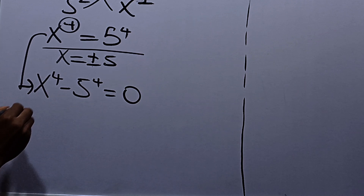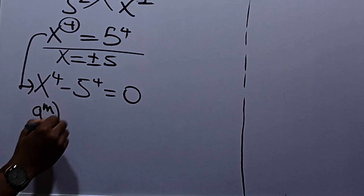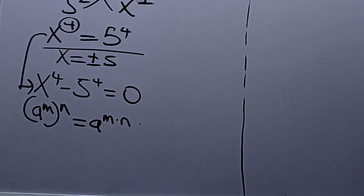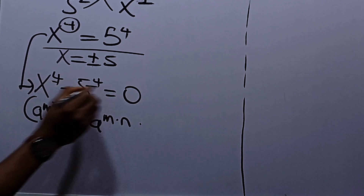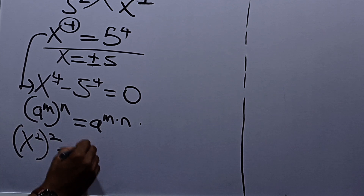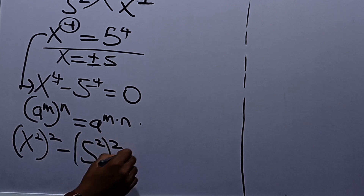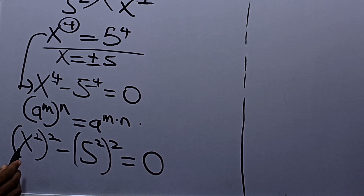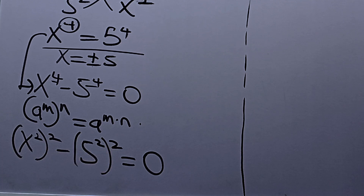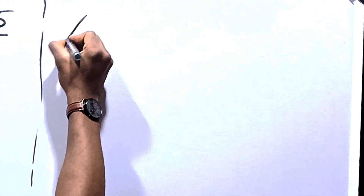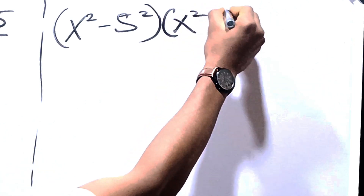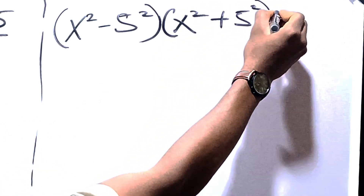From here, remember the law that says a raised to power m raised to power n is equal to a raised to power m multiplied by n — from indices. Applying this law, we can factor out 2 from both powers to get x squared squared minus 5 squared squared equals 0. Using difference of two squares, we have x squared minus 5 squared, multiplied by x squared plus 5 squared, equal to 0.